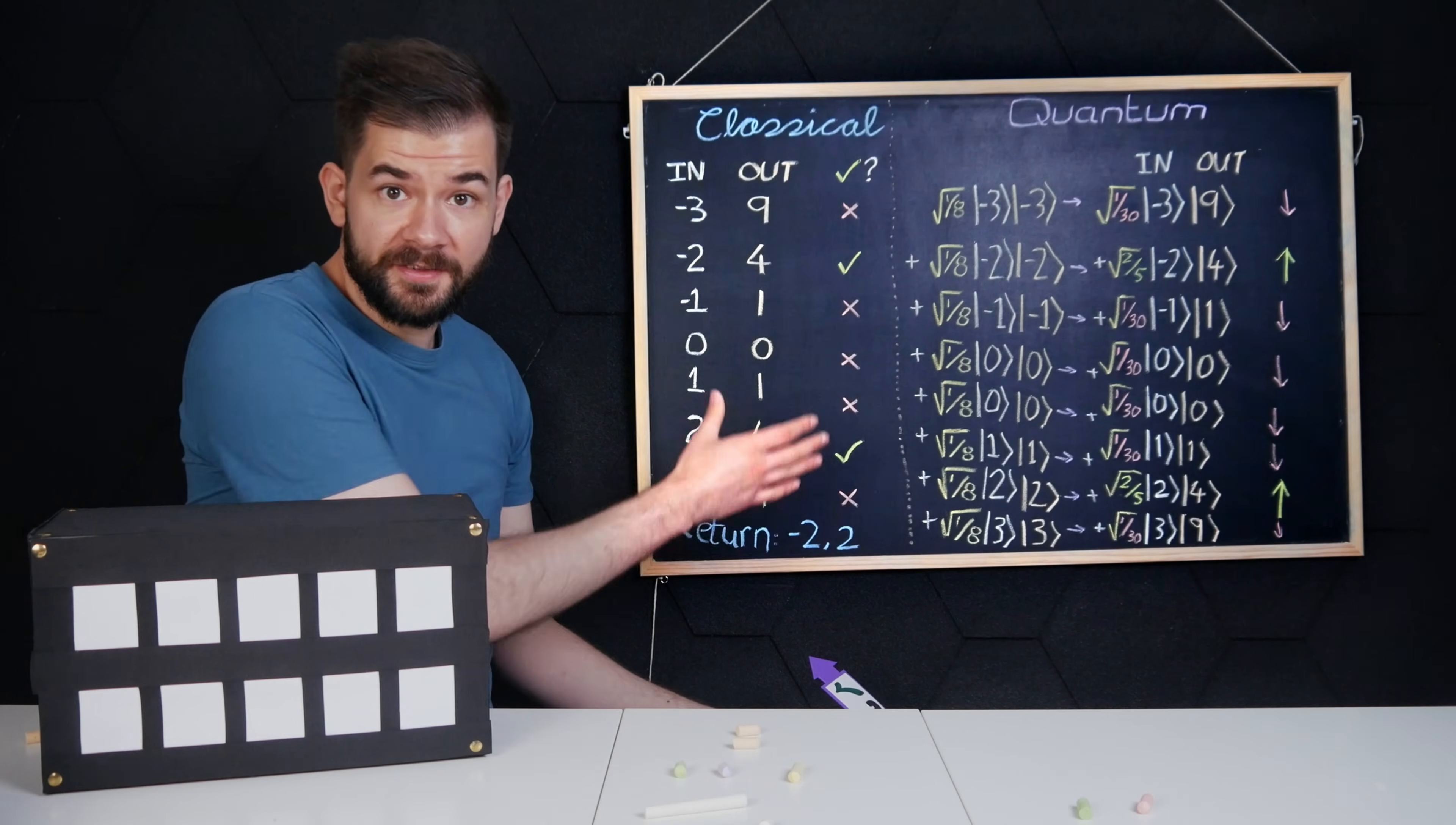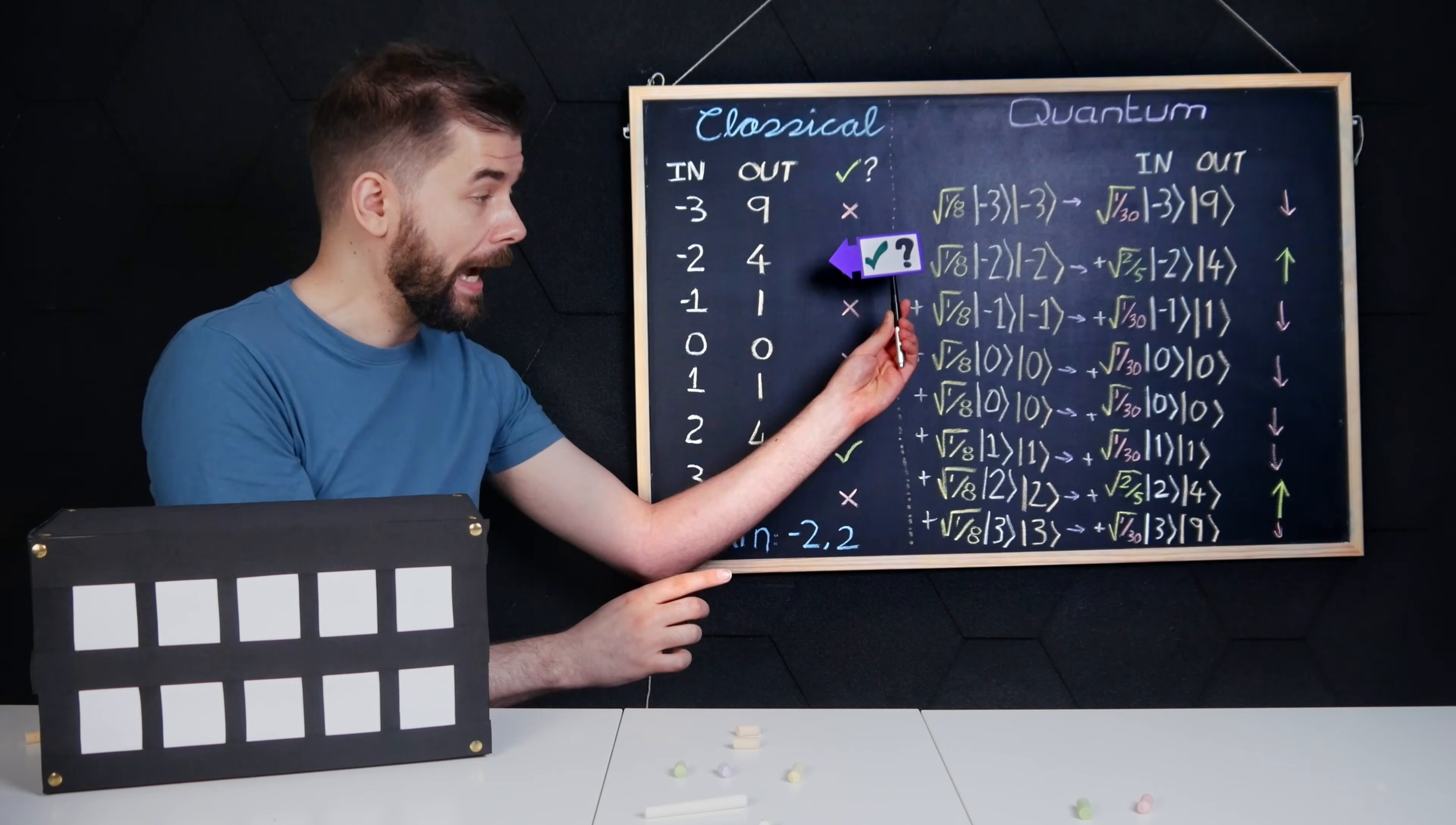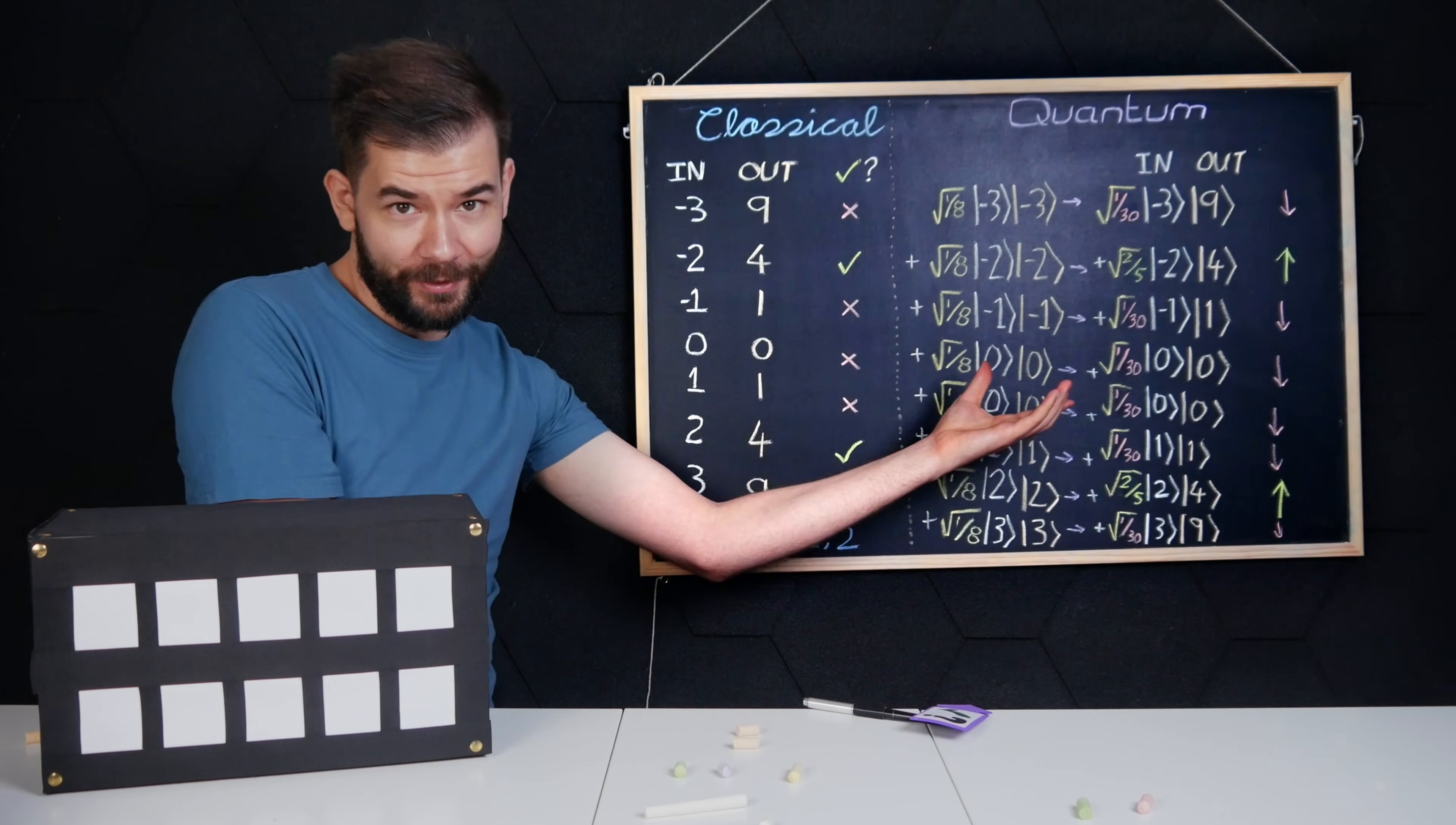To summarize, in the classical case, that was seven independent computations, each followed by an amirite check. In the quantum case, it was one computation and then one amirite application.